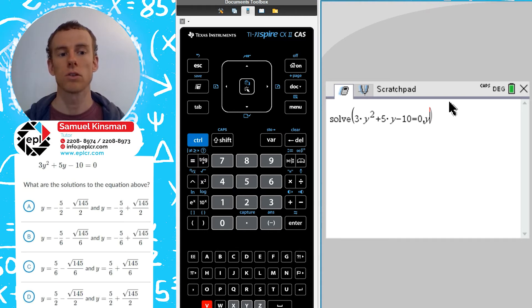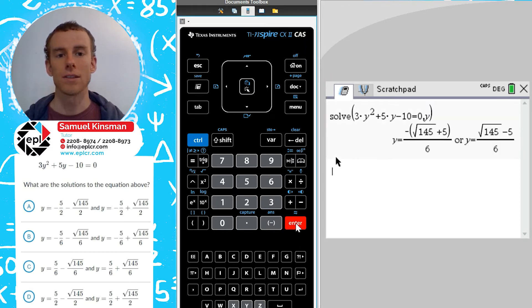And we also put in comma y at the end just so that it tells the calculator that we want it to solve for y. So I'm going to press enter and here we get the roots.